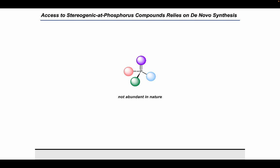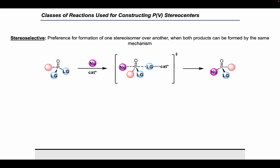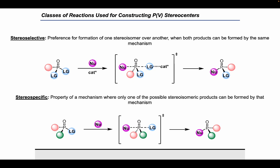In order to contemplate how one might develop synthetic methods to access stereogenic-at-phosphorus compounds, I want to discuss two key classes of reactions. The first is a stereoselective reaction, which shows a preference for the formation of one stereoisomer over another when both products can be formed by the same mechanism, often involving a chiral reagent or catalyst. The second is a stereospecific transformation, where the mechanism allows only one possible stereoisomeric product. For example, a single enantiomer of a stereogenic-at-phosphorus substrate undergoes a concerted, stereoinvertive nucleophilic substitution to exclusively yield the enantiomer with inverted configuration.